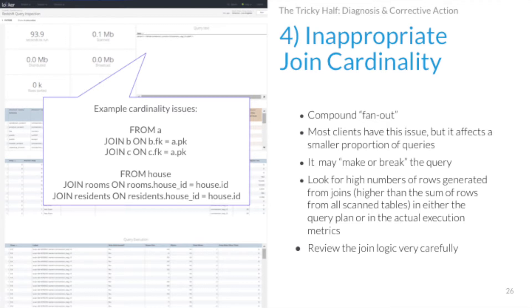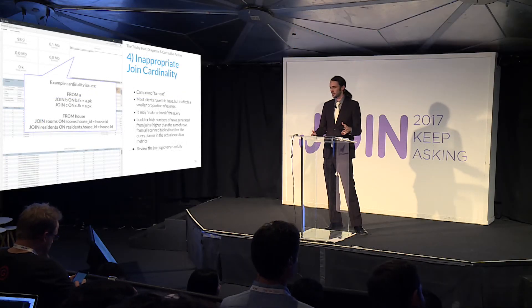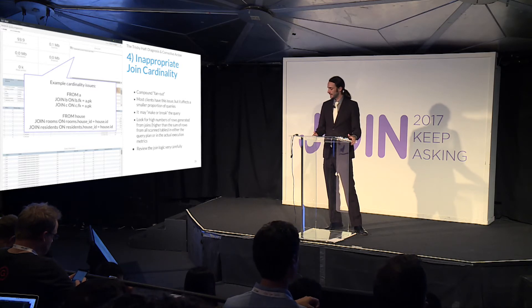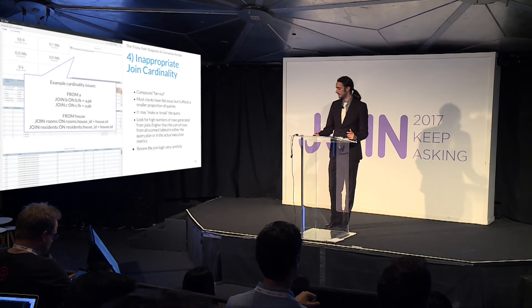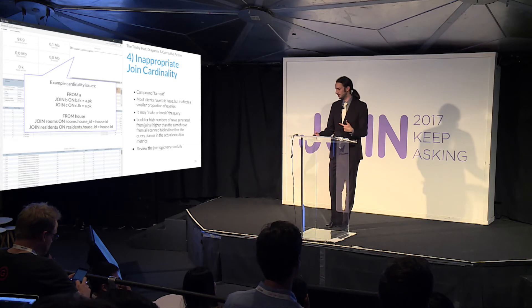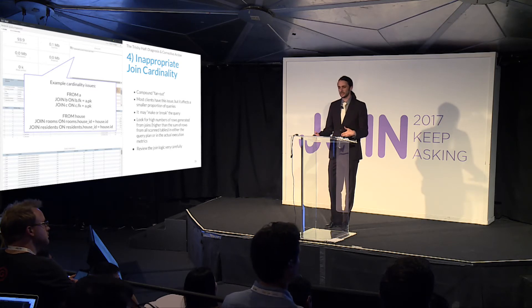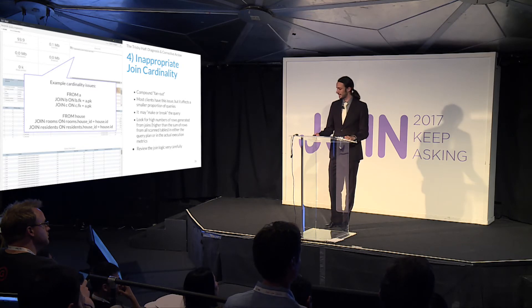Issue number four is inappropriate join cardinality. If you're familiar with fan out, this is what happens when you have fan out on top of fan out. For example, if you join rooms — five rooms to a house — and also join residents — five residents to a house — your intermediate result set suddenly has 25 records per house. With large cardinality joins, that can easily make or break a query, sometimes causing it to never finish running. A hint in the query plan is seeing a step with a very high number of rows returned compared to what the source tables had.